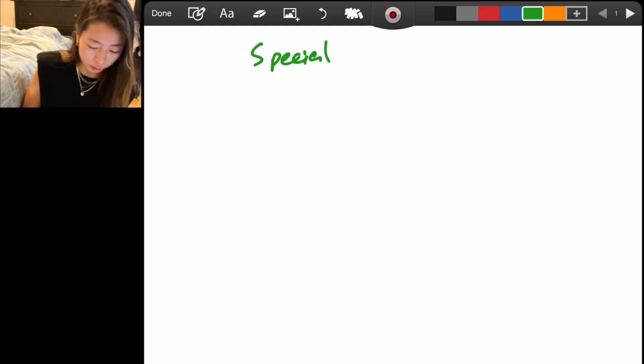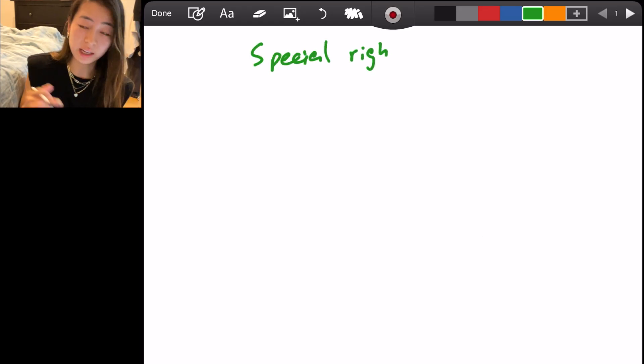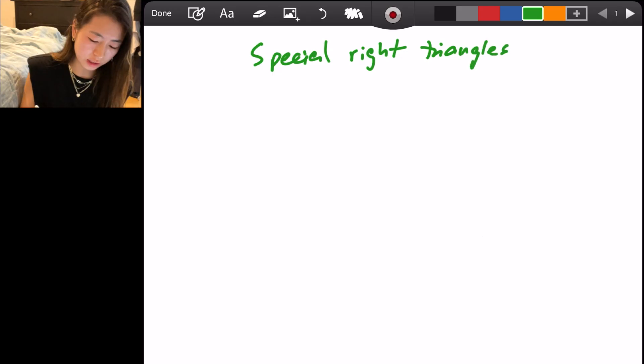Special right triangles are huge for saving time on the test because the ACT and SAT uses special right triangles all the time. I'll teach you common special right triangles. So there's 3, 4, 5. There's 5, 12, 13.